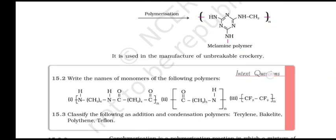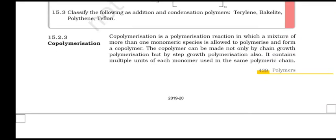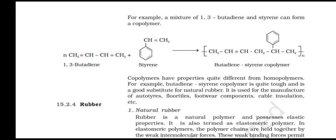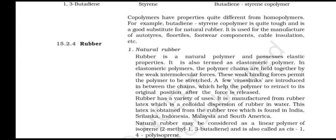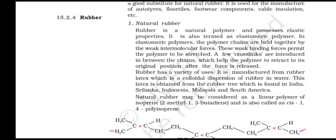Melamine-formaldehyde polymer: melamine-formaldehyde polymer is formed by condensation polymerization of melamine and formaldehyde. It is used in the manufacture of unbreakable crockery. Copolymerization: copolymerization is a polymerization reaction in which a mixture of more than one monomeric species is allowed to polymerize and form a copolymer. The copolymer can be made not only by chain growth polymerization but by step growth polymerization also. It contains multiple units of each monomer used in the same polymeric chain. For example, a mixture of 1,3-butadiene and styrene can form a copolymer. Copolymers have properties quite different from homopolymers — for example, butadiene-styrene copolymer is quite tough and is a good substitute for natural rubber, used for manufacture of tires, floor tiles, footwear components and cable insulation.